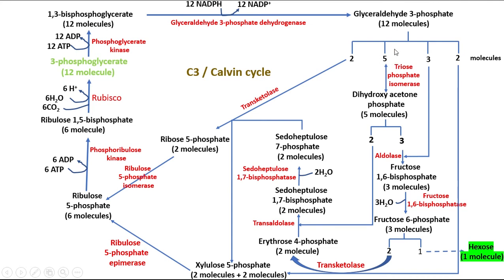Glyceraldehyde-3-phosphate participates in four types of reactions. Five molecules of glyceraldehyde-3-phosphate are converted into dihydroxyacetone phosphate by triosephosphate isomerase. Three molecules of dihydroxyacetone phosphate condense with three molecules of glyceraldehyde-3-phosphate to yield three molecules of fructose-1,6-bisphosphate, which are dephosphorylated by fructose-1,6-bisphosphatase to fructose-6-phosphate. This enzyme requires thiamine pyrophosphate and Mg2+ as cofactors.